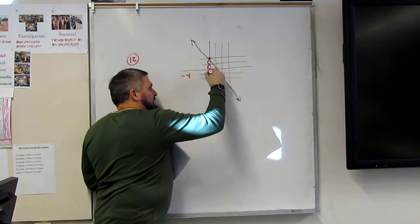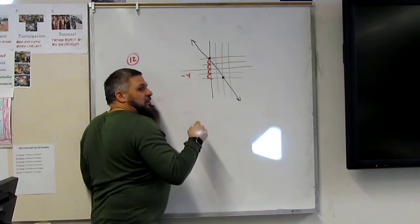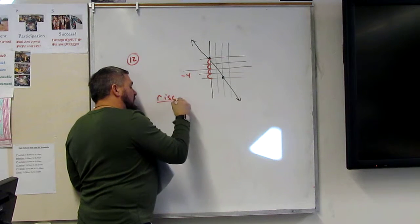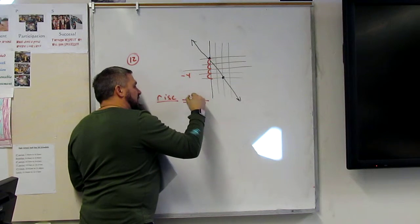1, 2, 3, 4. Good. And so that would be the rise, right? Yeah. Rise over. And that would be negative 4.